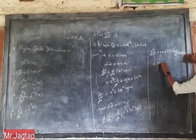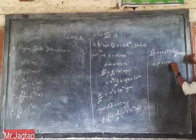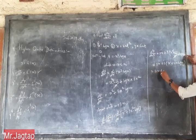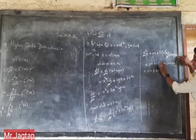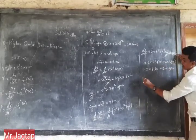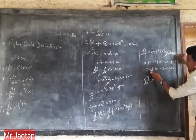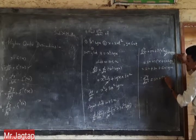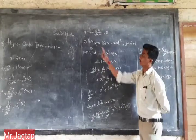This equals 2x plus 3x plus 6x log x. Therefore d²y/dx² equals 2x plus 3x equals 5x, plus 6x log x. This is our second derivative of the first function.